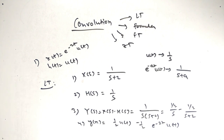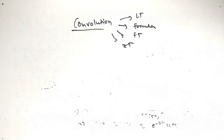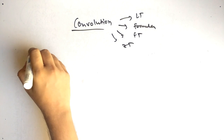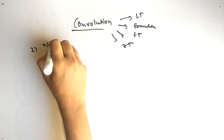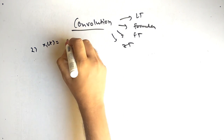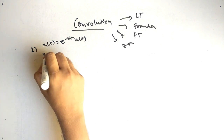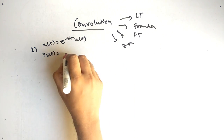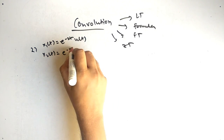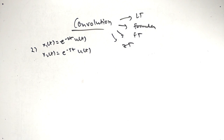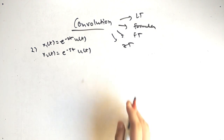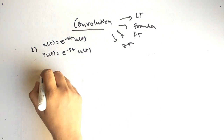Let's take another example and solve it by another method. Our second question is: x1 of t equals e raised to minus 2t times u of t, and x2 of t equals e raised to minus 5t times u of t. We have to solve this using the convolution formula.